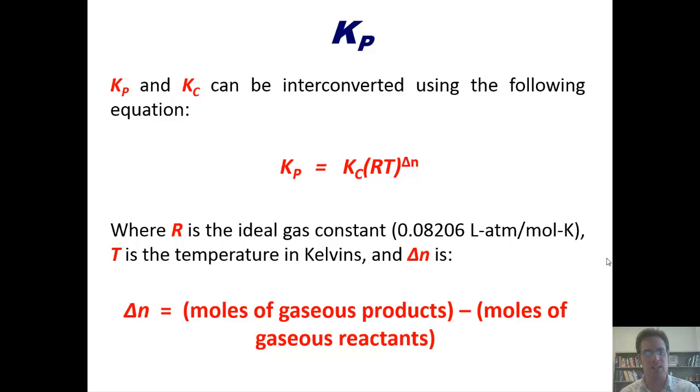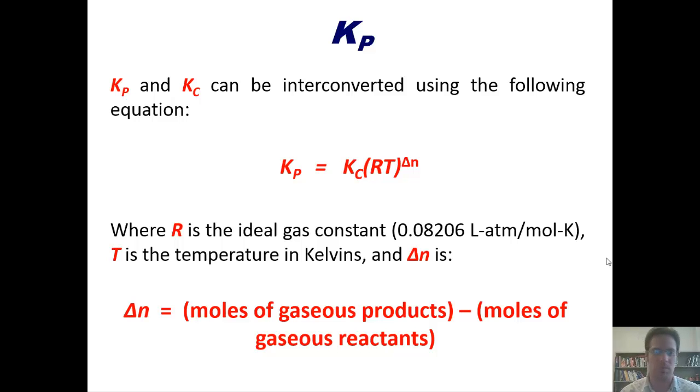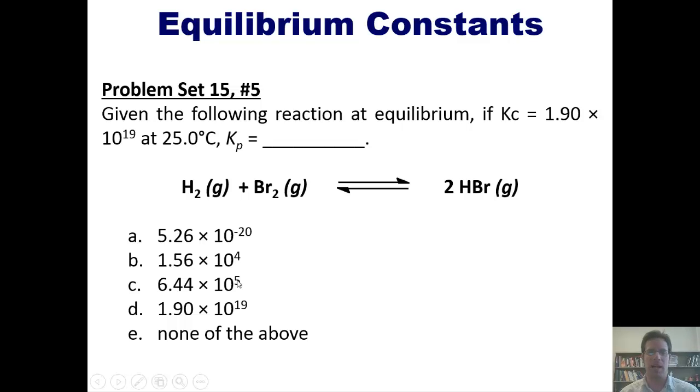I've now introduced you to Kc and Kp. Let's take a look at some problems. Given the following reaction at equilibrium, if Kc equals this number at 25 degrees Celsius, what is Kp? I'll let you look at this. You're welcome to attempt it on your own, and if you want to watch me do it, you can click a link here to a separate video in which I'll do it on my whiteboard.